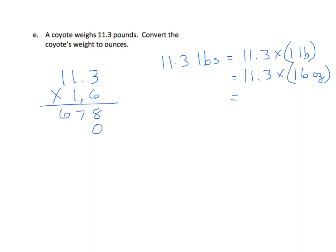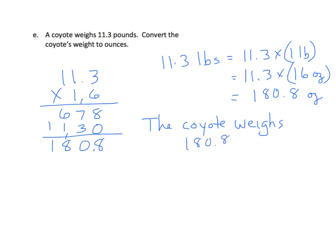Now we need to multiply 11.3 times 16. And multiply from the tenths. And again, 1 in the tenths place makes this very easy. Add our partial products. And our coyote weighs 180.8 ounces. The coyote weighs 180.8 ounces.